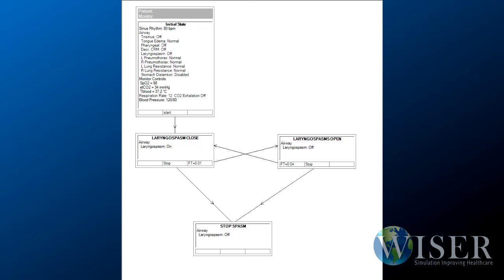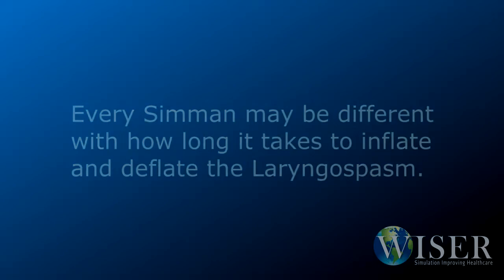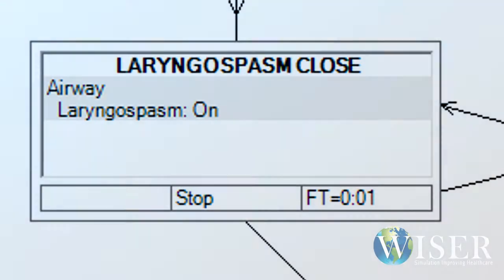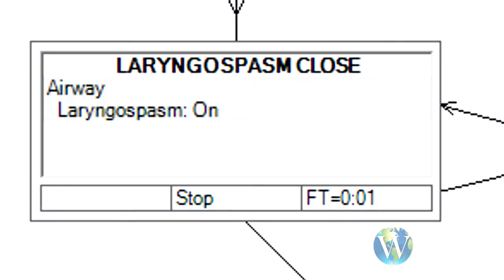The simplest loop would look like this. Every SIMMAN may be different with how long it takes to inflate and deflate the laryngospasm. The inflate time will normally be longer than the deflate time, so ensure that the frame that turns laryngospasm off has a slightly longer time before returning to the other frame.